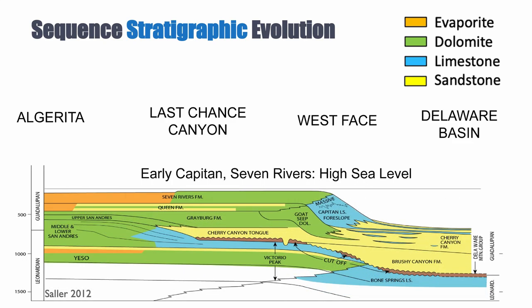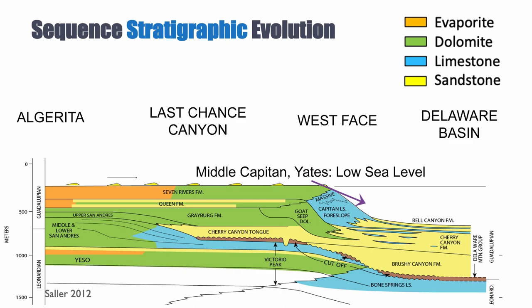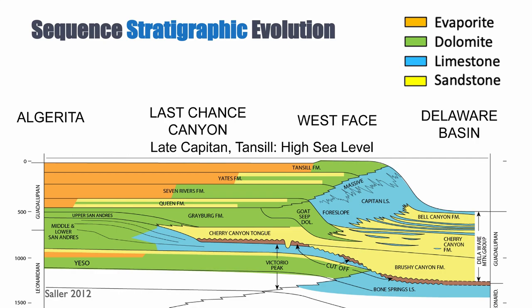Above the San Andreas comes the Capitan formation, also associated with the Seven Rivers formation in the back. We have evidence for progradation of the carbonates and also for a steepening of the geometry of that system. During low stand we have sand; during high stand we have carbonates. The system is prograding into the basin, filling some of the accommodation available in the Delaware basin.